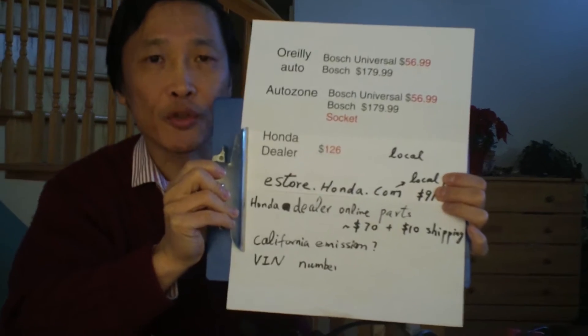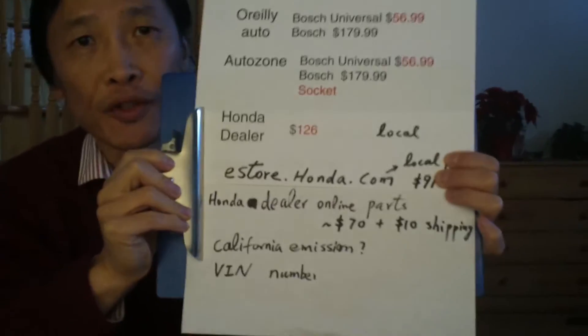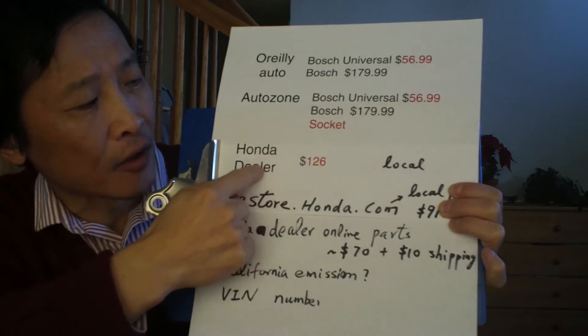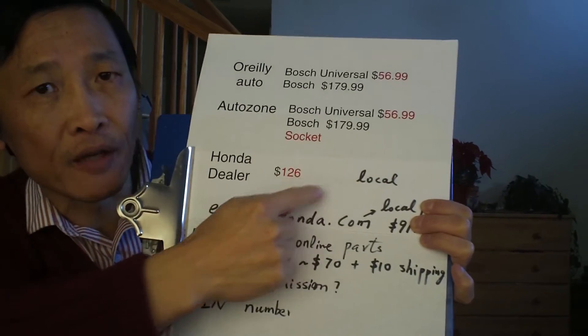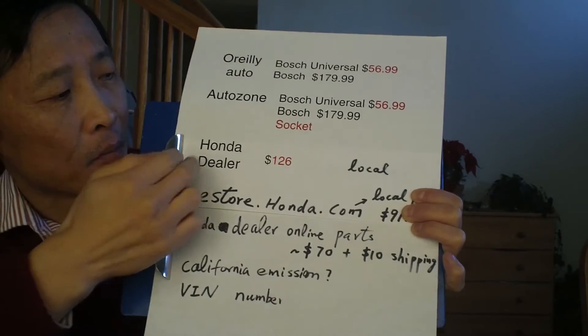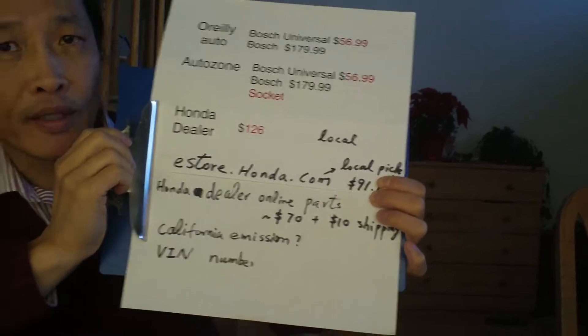To save you some money, I will show you three different ways to make a purchase for the genuine Honda part. The first way is certainly Honda's local dealer. They quoted me $126. The advantage of it is it's local, I can go there and get it the same day. But because this type of thing is not critical, I can wait a few days.